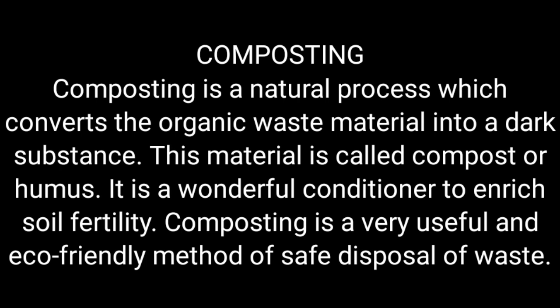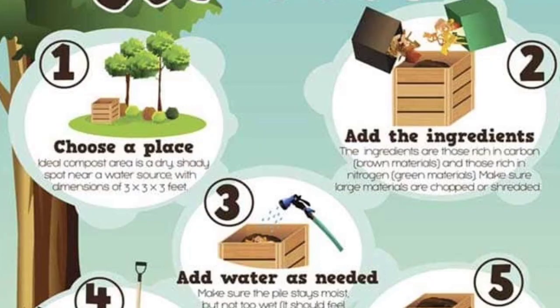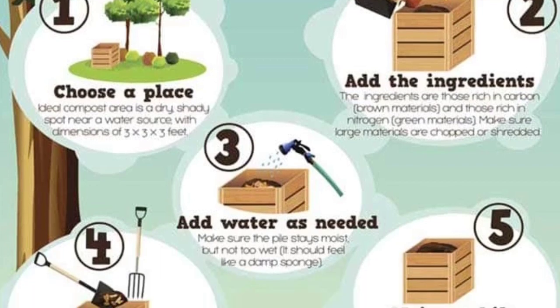Composting can be followed in every household. Organic waste is separated through segregation and decomposed separately using the composting method, which can then be utilized for home and kitchen gardening. It can be done anywhere by digging a small depression or preparing a box, adding all the organic ingredients along with water to keep the mixture damp.